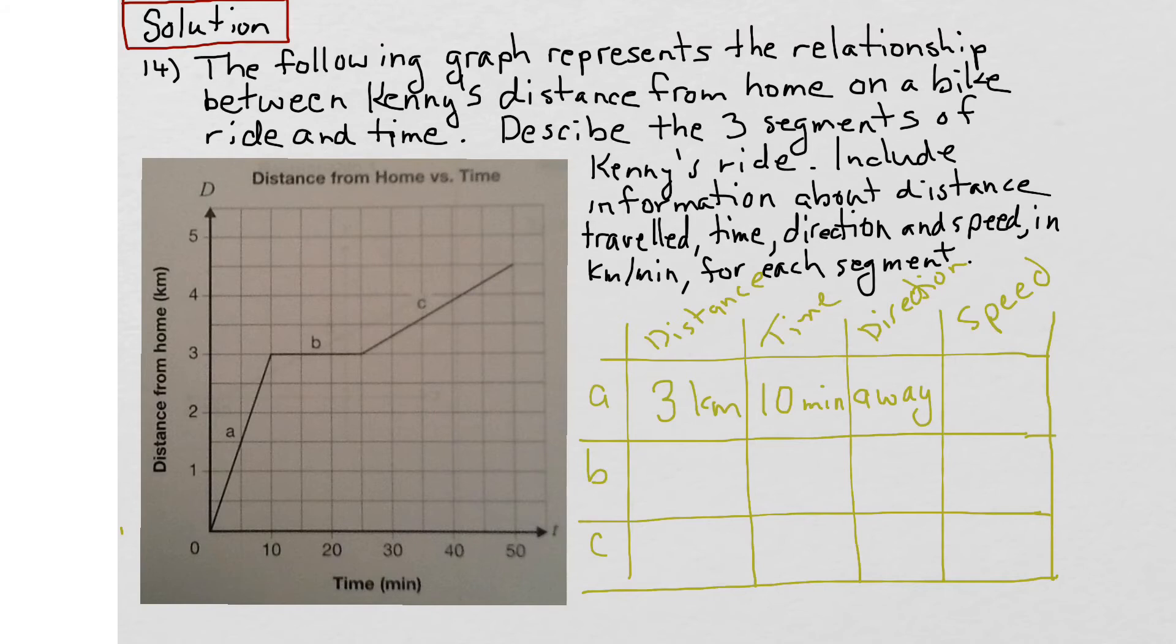And finally, for this segment, what about the speed? They want speed here in terms of kilometers per minute. The distance traveled is three kilometers, time is ten minutes. Therefore, the speed is three kilometers per ten minutes, or if you like, we can make it a decimal and say 0.3 kilometers per minute.